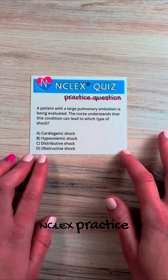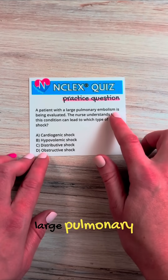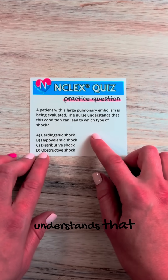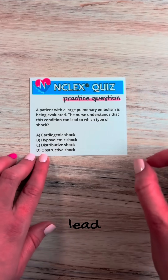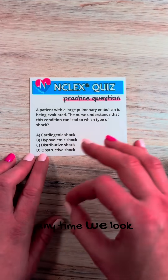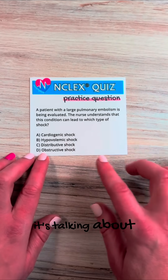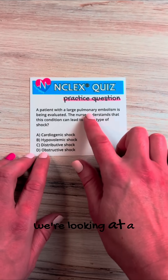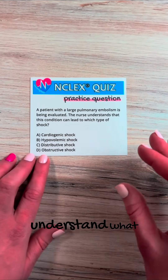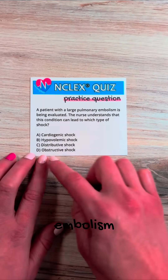Let's work through an NCLEX practice question. A patient with a large pulmonary embolism is being evaluated. The nurse understands that this condition can lead to which type of shock? Anytime we look at an NCLEX question, we always want to make sure we know what it's talking about. So here, we're looking at a pulmonary embolism, and we have to understand what the pathophysiology is for a pulmonary embolism.